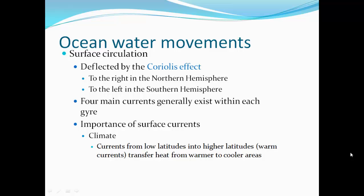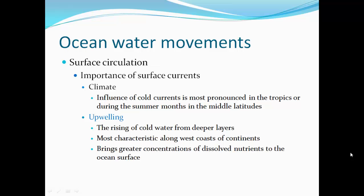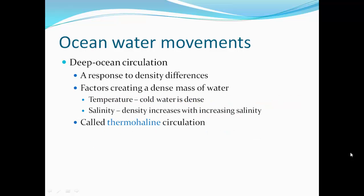What's important about surface currents is that they affect climate. Currents from low latitudes to higher latitudes bring warm currents and transfer heat from warmer to cooler areas. The influence of cold currents is most pronounced in the tropics or during the summer months at mid-latitudes. This causes upwelling — the rising of cold water from deep layers — most characteristic along west coasts of continents, bringing greater concentrations of dissolved nutrients to the ocean surface.